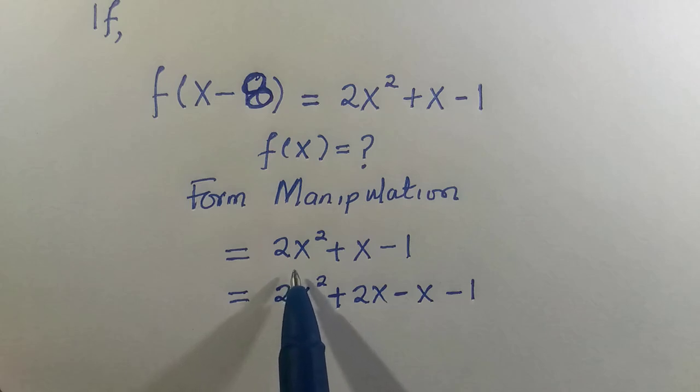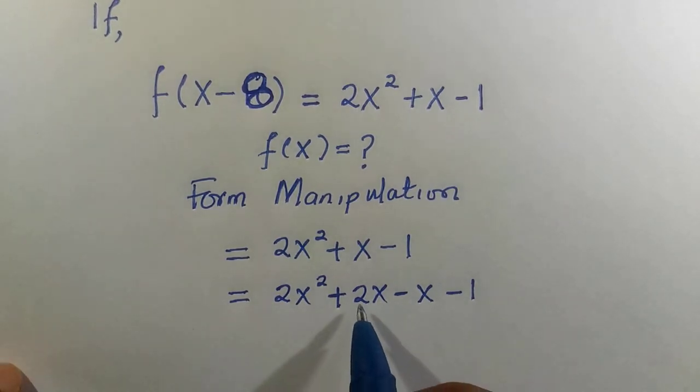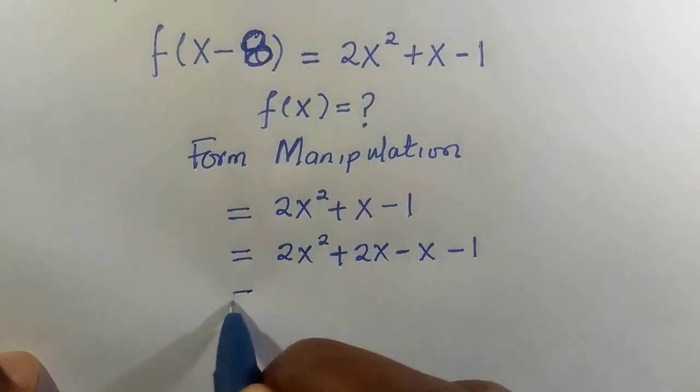When the coefficient of x² is more than 1, we multiply it with the constant term. That is how I got it. Then we multiply by -1, that's -2. And 2 - 1 = 1. Then we try to group it.